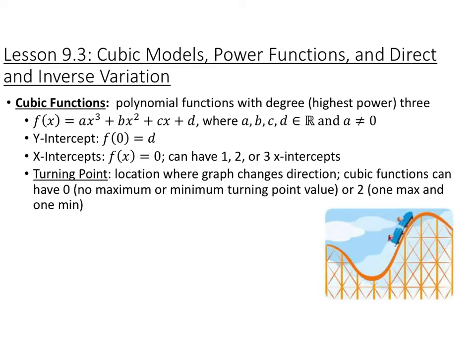Turning points are where a graph changes direction. Like a roller coaster, it would be at the bottom where it goes from decreasing to increasing, or at the top where it goes from increasing to decreasing. Cubic functions can have either 0 turning points, or 2 — one local max and one local min.